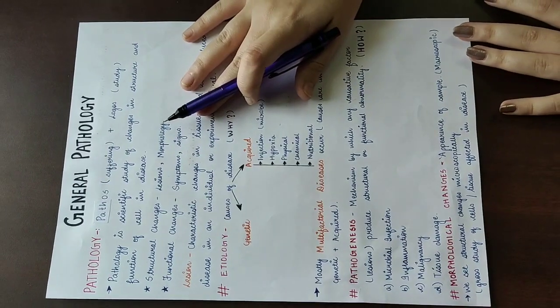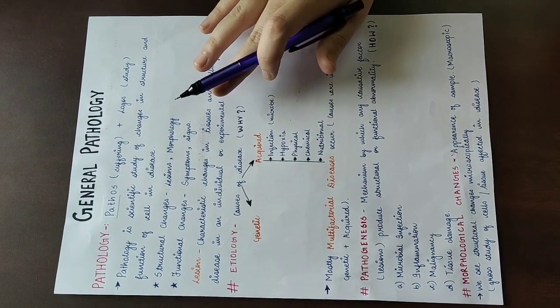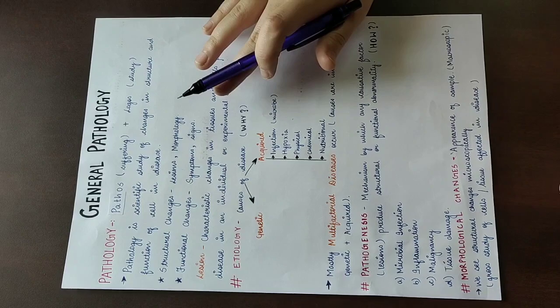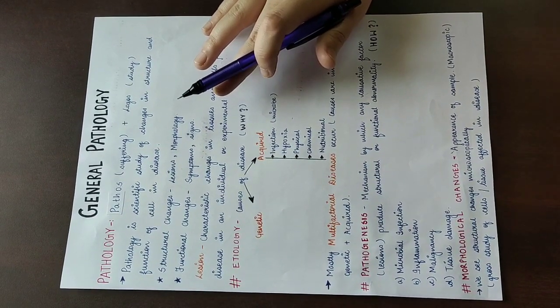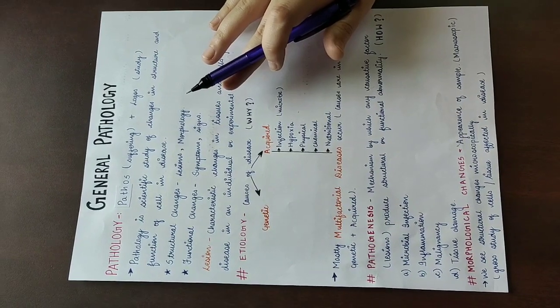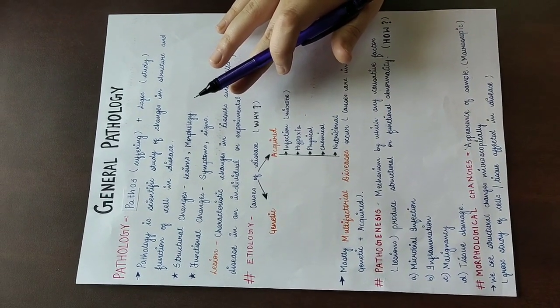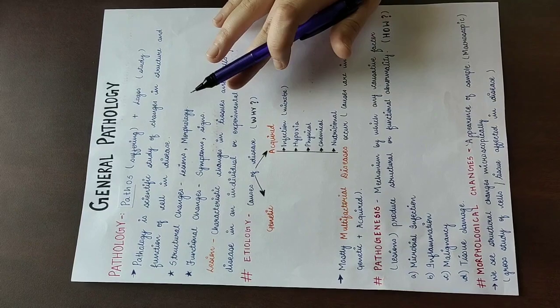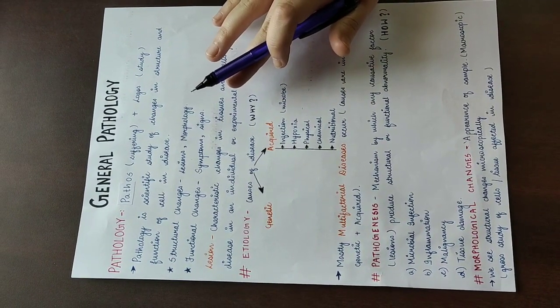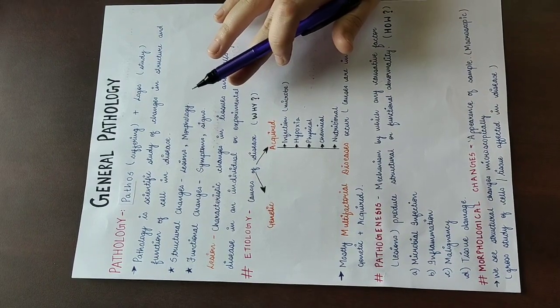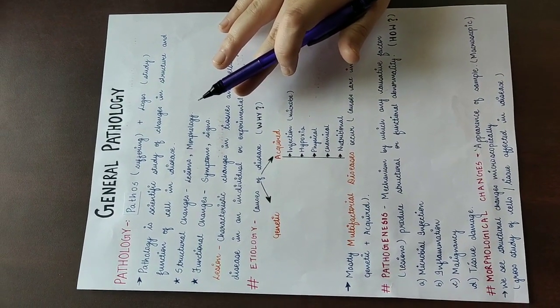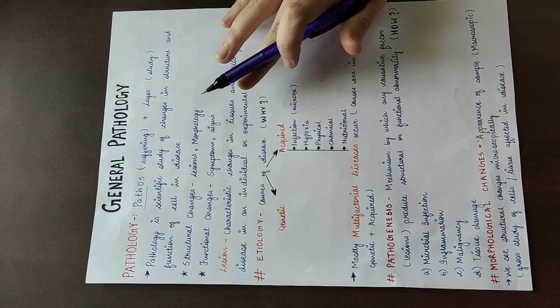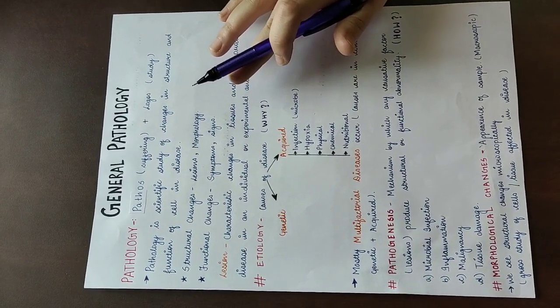Morphological changes - there are two types: macroscopic changes and microscopic changes. Macroscopic changes are those which can be seen with naked eyes. When we have some disease, if we study under the microscope what structural changes occur, those are microscopic changes.